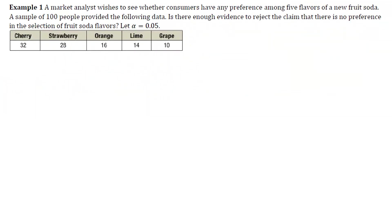Example one: a market analyst wishes to see whether consumers have any preference among five flavors of a new fruit soda. A sample of 100 people provided the following data. We want to answer: is there enough evidence to reject the claim that there is no preference in the selection of fruit soda flavors? Our level of significance is 0.05. We can see the breakdown of responses from the 100 people for those five flavors.